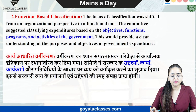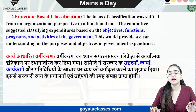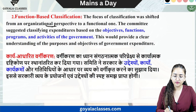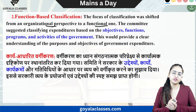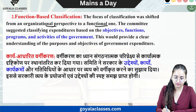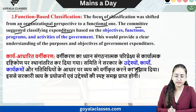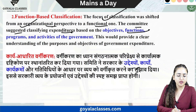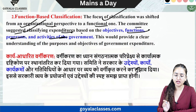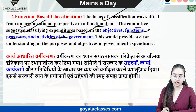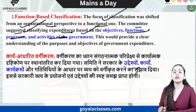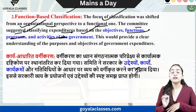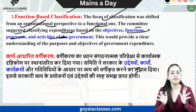The next principle is function-based classification. The committee recommended shifting from an organizational perspective to a functional one. The traditional approach was organizational-based or department-based. The committee suggested that expenditure classification should be based on objective, function, program, and activities — not on organizational basis. The classification should be functional-based, logical, and applicable to every department.